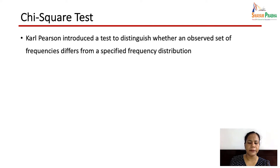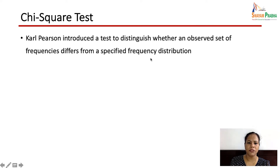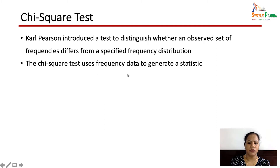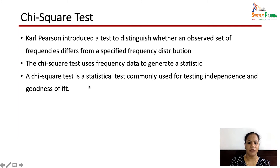Now let us talk about the chi-square test. Chi-square test was introduced by Karl Pearson to distinguish whether an observed set of frequencies differs from a specified frequency distribution. The chi-square test uses frequency data to generate the statistics, and the variables should be categorical. It is a statistical test commonly used to test independence and goodness of fit.